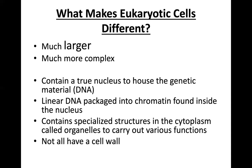The eukaryotic cell has linear DNA organized into chromatin found inside the nucleus, so the DNA is packaged in chromatin form. In the prokaryotic cell, the DNA does not have this structure — both have DNA, but the superior organization of DNA into chromatin is specific to eukaryotic cells.